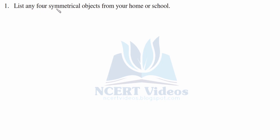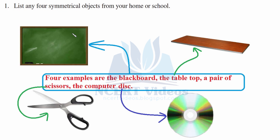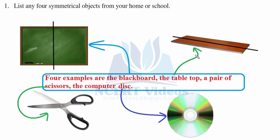Question 1: List any four symmetrical objects from your home or school. The following four symmetrical objects are found at home or school. First is the blackboard — it can have two lines of symmetry. If you ignore the chalks, it is symmetrical. If you place a mirror here you will see the other side. For a table, this is the line of symmetry — placing a big mirror will show the other figure, and it also has another line of symmetry.